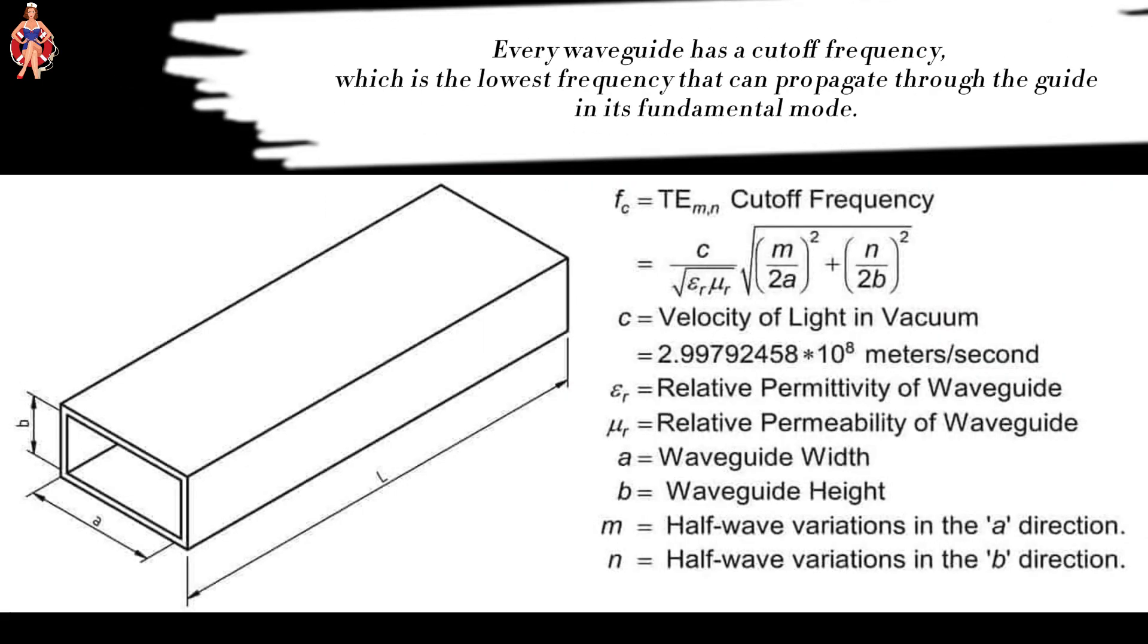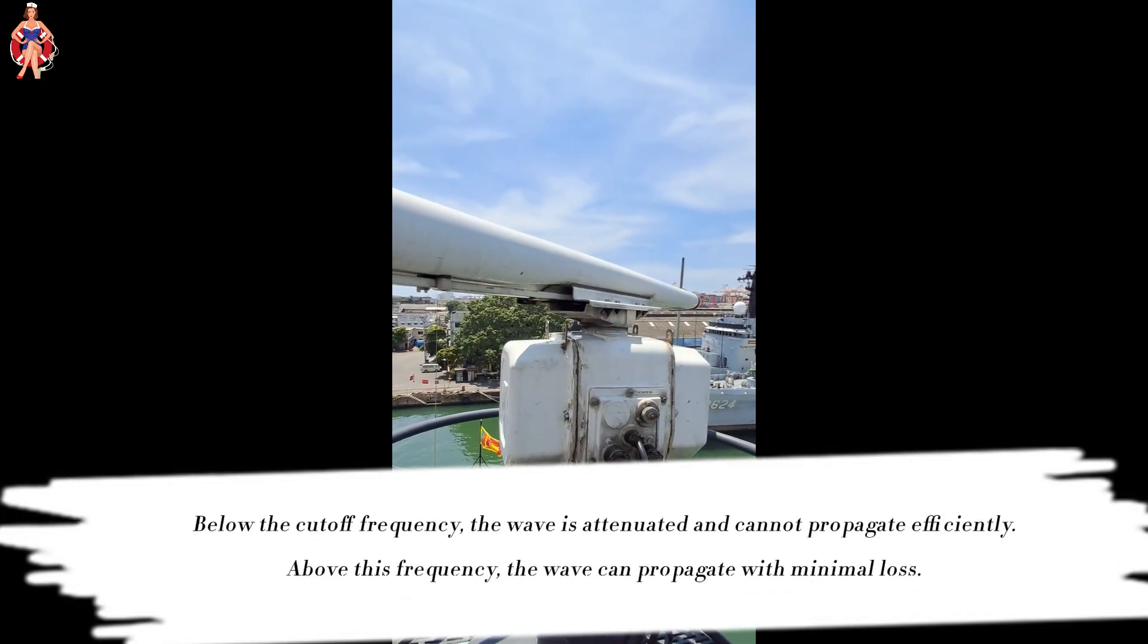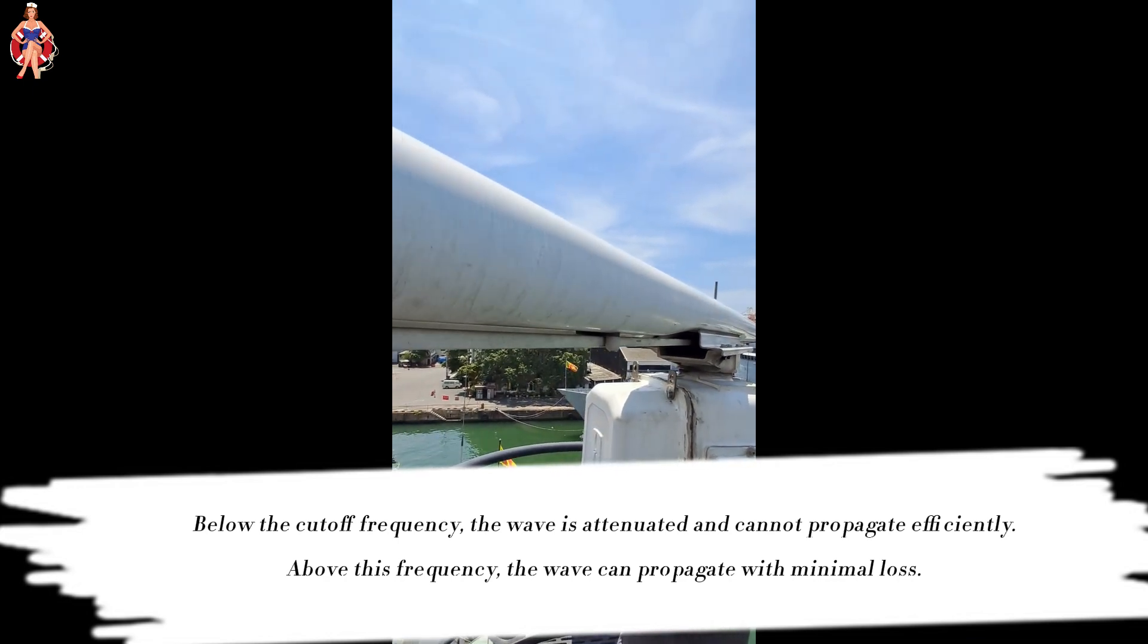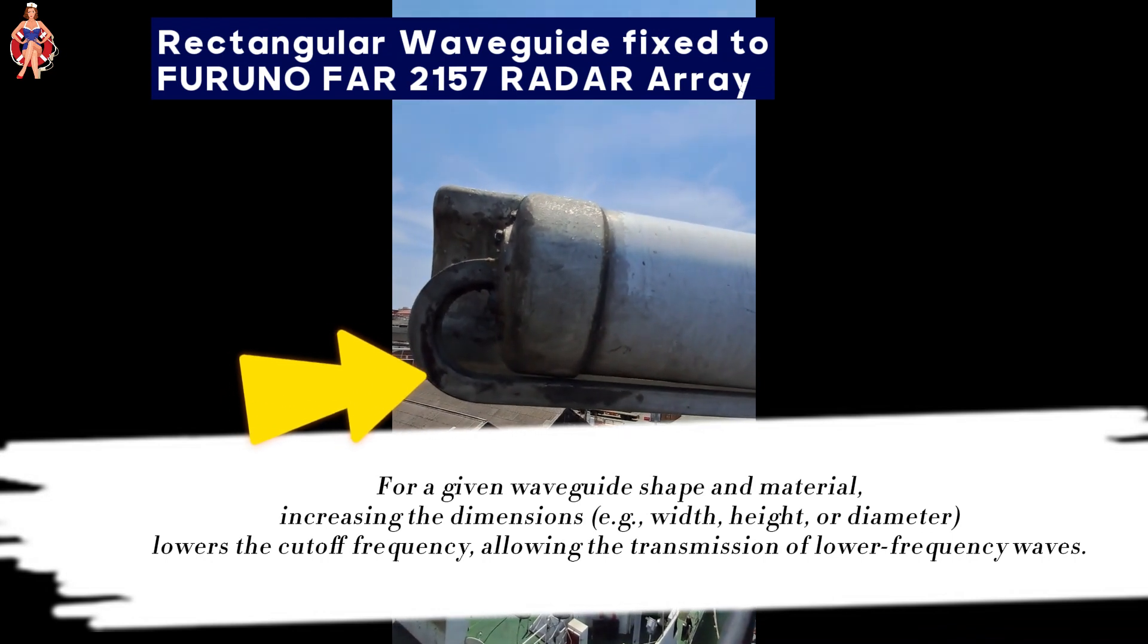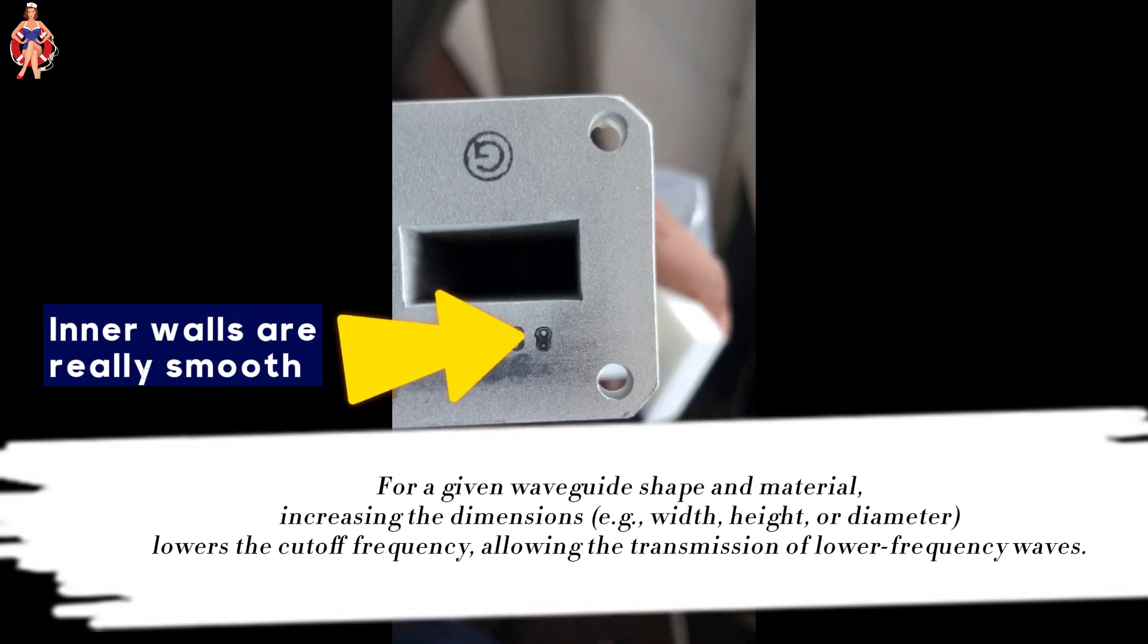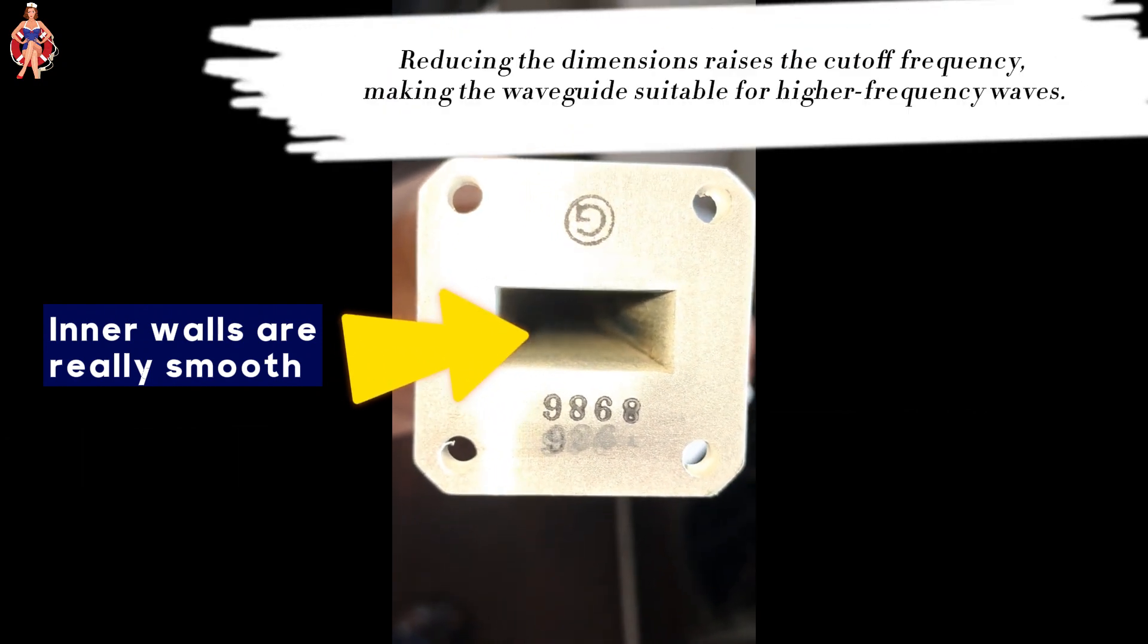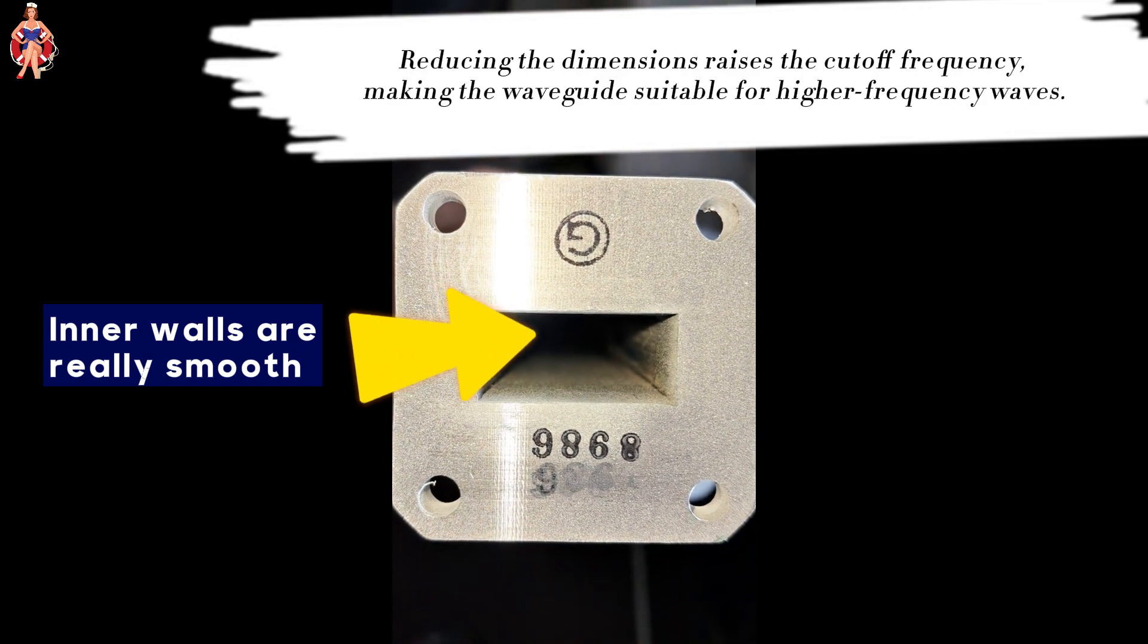Every waveguide has a cutoff frequency, which is the lowest frequency that can propagate through the guide in its fundamental mode. Below the cutoff frequency, the wave is attenuated and cannot propagate efficiently. Above this frequency, the wave can propagate with minimal loss. For a given waveguide shape and material, increasing the dimensions lowers the cutoff frequency, allowing the transmission of lower frequency waves. Conversely, reducing the dimensions raises the cutoff frequency, making the waveguide suitable for higher frequency waves.